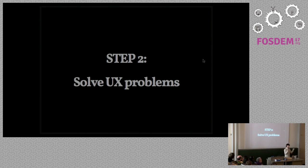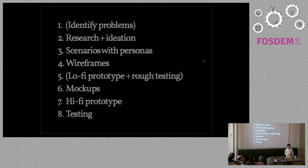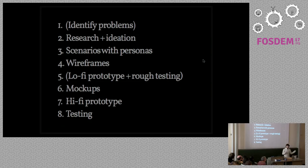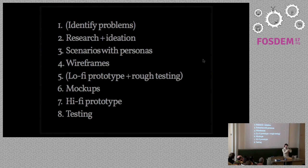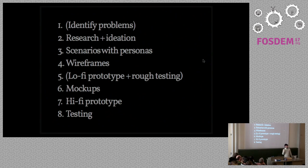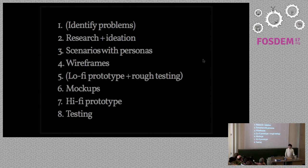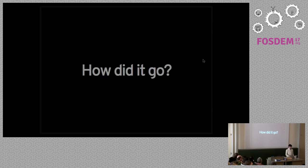We'd start solving user experience problems. The process was: do some testing at the beginning, look for hypotheses, identify bugs from the bug tracker, do research and ideation for those bugs, then put personas in the scenarios in which they're running into this bug and try to find solutions. Then do some wireframes and test those. Maybe go to mockup phase and test on the mockups themselves, because sometimes you don't need a wireframing phase. Once we figured out something works for people, we'd move on to the next bug — a straightforward process that can be applied not just in MuseScore but in other communities as well.